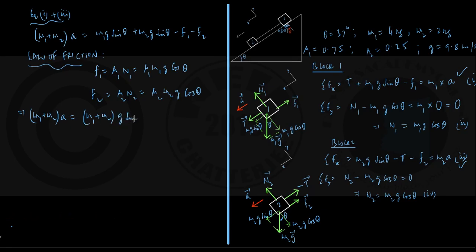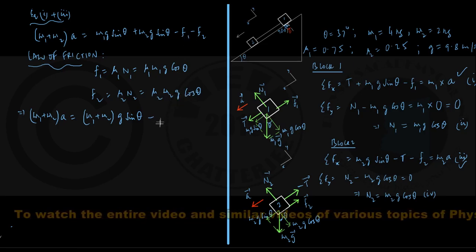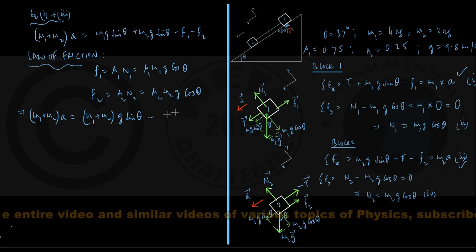into g sin theta minus, this is mu1 m1 g cos theta and f2 is mu2 m2 g cos theta. And therefore, if I take g cos theta,